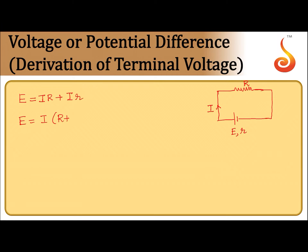So we can write E is equal to I times (R + r), or we can solve for current drawn from the cell: I is equal to E divided by (R + r). Therefore, current drawn from the cell equals net EMF divided by total resistance.